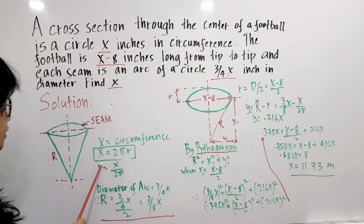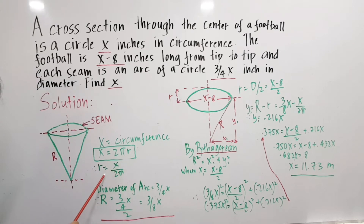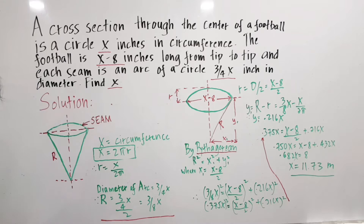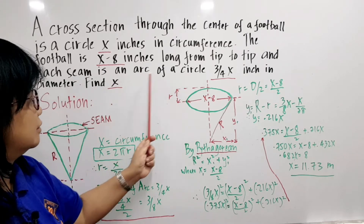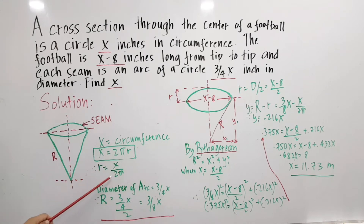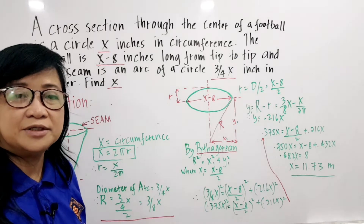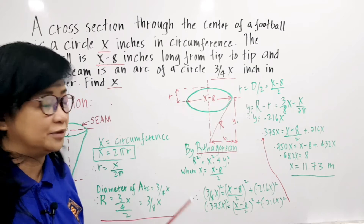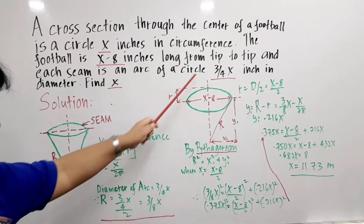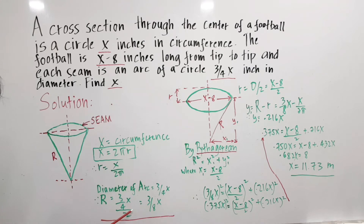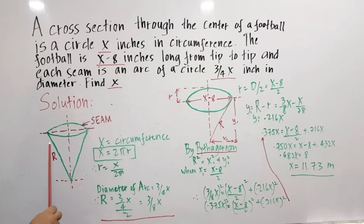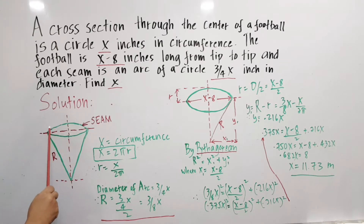If we solve for r, the radius of the circle is equal to x over 2π. Now the diameter of the arc of a circle is 3/4 x. Since the diameter equals twice the radius, half of 3/4 x gives us the radius of the arc: 3/4 x divided by 2 is equal to 3/8 x.